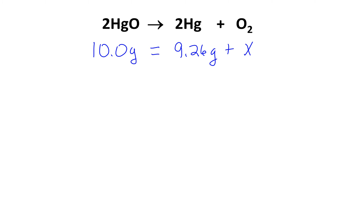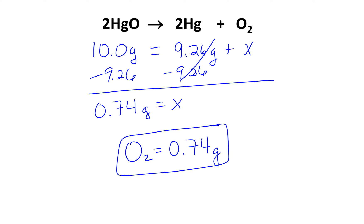Get rid of the grams and we have an algebra equation. We have 10 equals 9.26 plus X. I think you guys can handle solving this equation, but just in case you can't, let's subtract 9.26 from both sides. So we get 0.74 grams equals X. So the mass of your O2 is 0.74 grams. Kind of easy on that one, right?